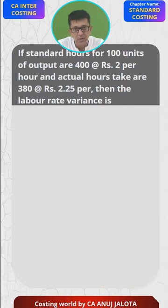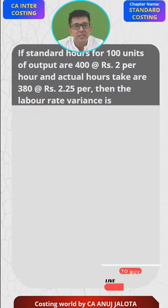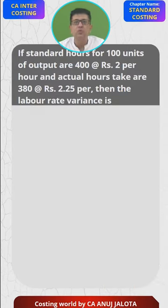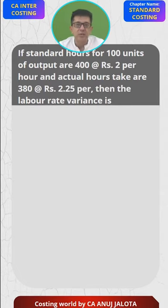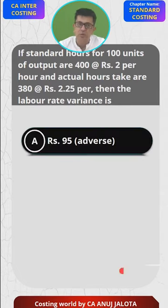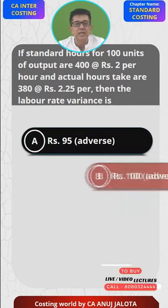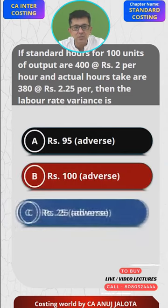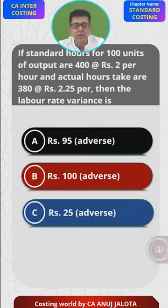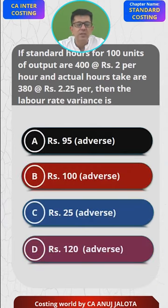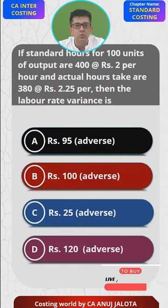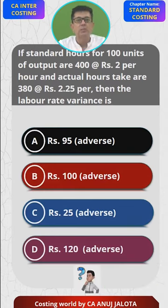If standard hours for 100 units of output are 400 at the rate of 2 per hour, and actual hours taken are 380 at the rate of 2.25, then the labor rate variance is equal to? The four options are: A) 95 adverse, B) 100 adverse, C) 25 adverse, D) 120 adverse. Pick up your calculators or use your mental power to arrive at the answer — please comment below.